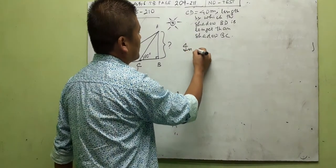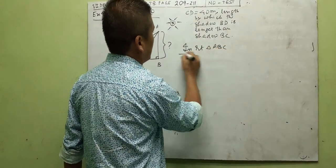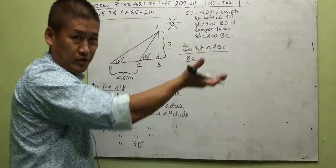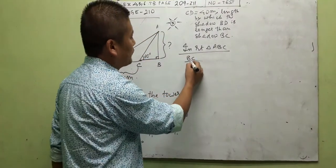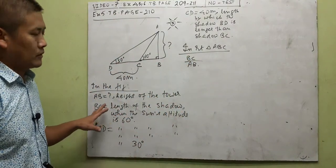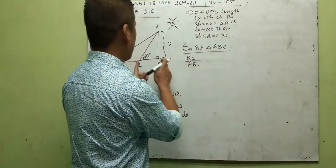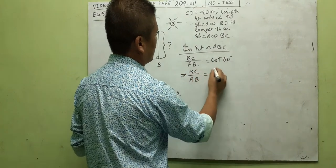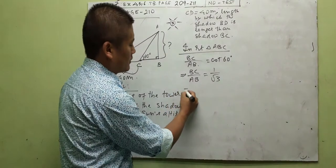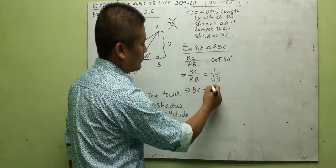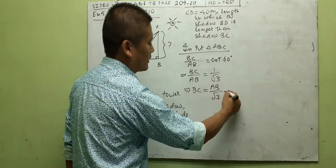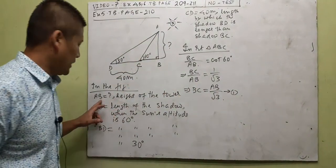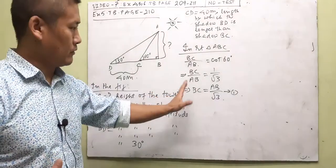Start with the small right triangle ABC. We write BC by AB — putting AB in the denominator because we want to find AB. BC by AB equals cot 60, which is 1 by root 3. So BC equals AB by root 3. That's equation one. Now we can insert this AB term into the next equation. In right triangle ABD, write AB by BD — opposite by adjacent — equals tan 30, which is 1 by root 3.